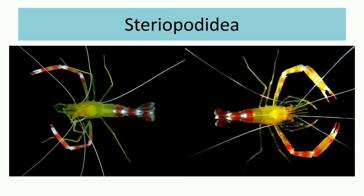The last section is Sergestidae. In this group, there are three chelate legs, and at least the third leg is heavier than the first two. It usually includes Sergestes, which is a kind of shrimp found in marine deep water.